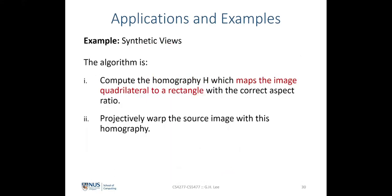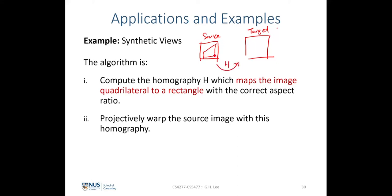Let's look at the algorithm to achieve this. The first step is: given a source image and a target image, I need to identify the quadrilateral shape of the plane in the source image and identify its four vertices. The objective is to find the homography that maps this quadrilateral from the source image into a perfect rectangle of a predefined aspect ratio. So I need to define the desired aspect ratio of this warping.